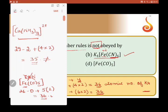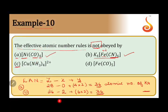It is obeying effective atomic number rule. So, out of all these 4 options, A, B and D obey EAN rule. Only C is the one which is not obeying EAN rule.